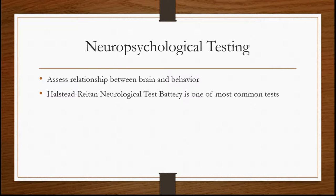The third type of psychological testing I wanted to mention is neuropsychological testing — testing done to assess the relationship between the brain and behavior. Sometimes there can be abnormalities in the physiological structure of the brain that affect behavior. For example, people who have experienced a traumatic brain injury often have drastic personality and behavioral changes related to a physiological change in the brain. The Halstead-Reitan neurological test battery is probably the most common of the neuropsychological tests.